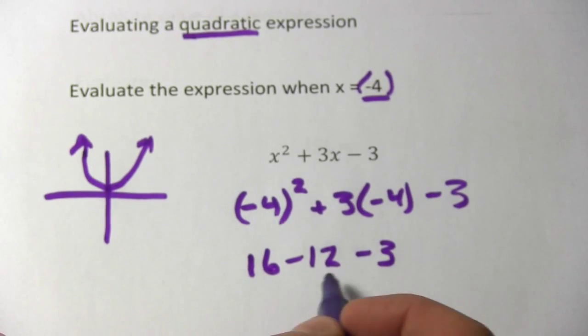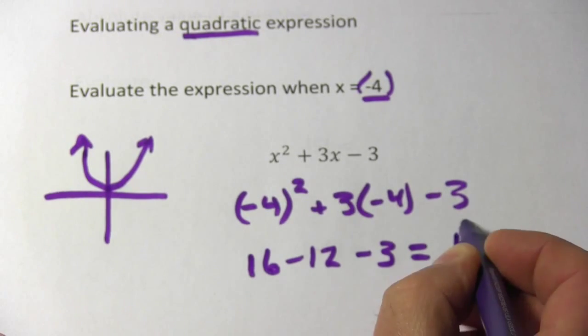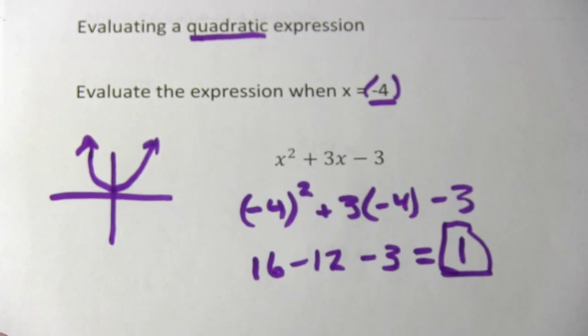So we'll just do our subtraction here. 16 minus 12 is 4. Minus 3 is 1. And that is how to evaluate a quadratic expression.